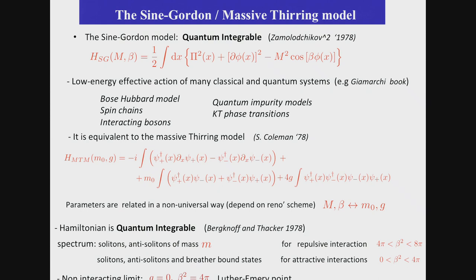It is equivalent to another model through bosonization, to a model which is called the massive Thirring model, where you have right and left movers, plus, minus. You have a mass term, and you have a density-density interaction. And there is a very precise way to relate the parameters of the theory here, which are m and beta, to the parameters here, which are m0 and g. Now, this relationship is not universal. Both models are renormalizable field theories, and they need to be renormalized.